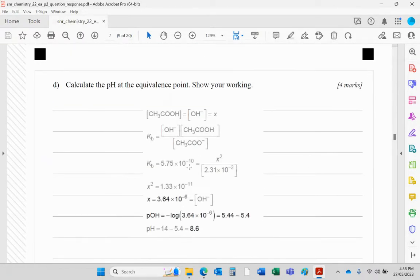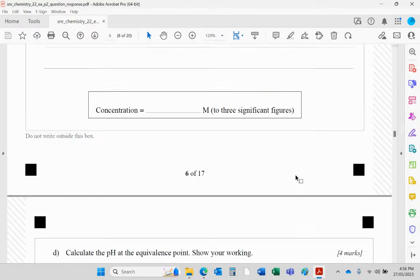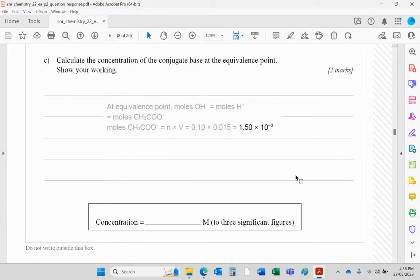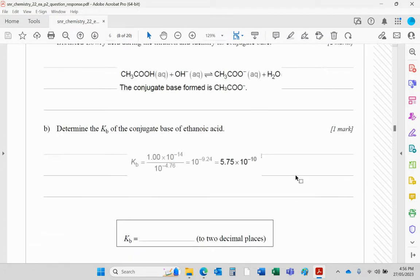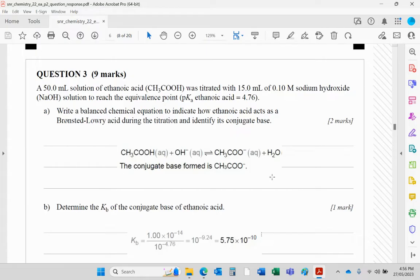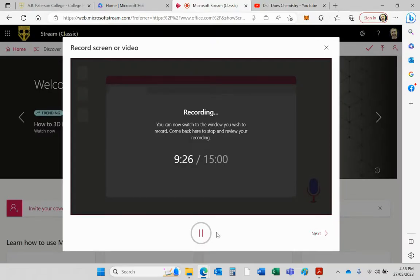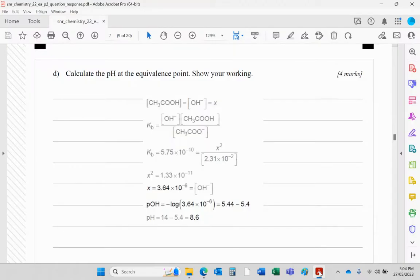So Kb is 5.75 times 10 to the minus 10. Now, since these two are the same, we can change that to X squared. And the anion concentration was worked out up here somewhere. Where was the anion concentration? Sorry guys. Let's pause this for a sec.